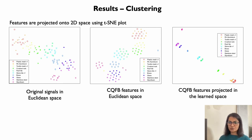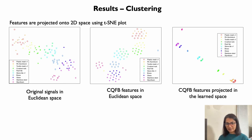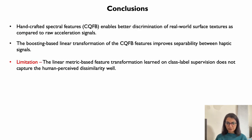The left figure shows the input haptic signals in the original space, and the middle figure shows the proposed CQFB features projected in 2D space. As seen clearly, CQFB features form clear class-based clusters compared to the original haptic signals. On the right, the learned boosting-based features induce more compact clusters with low intra-class variance and high inter-class separation.